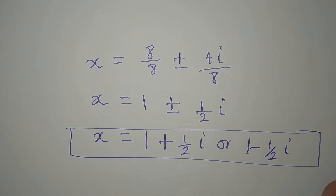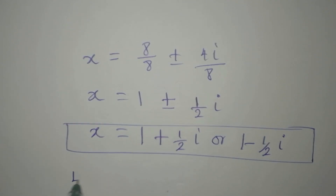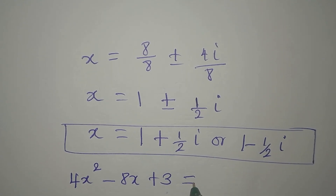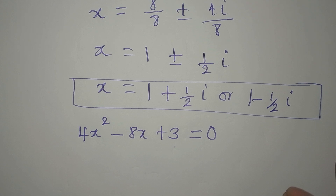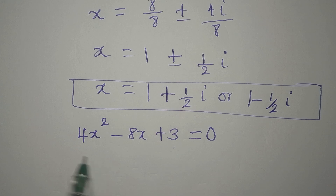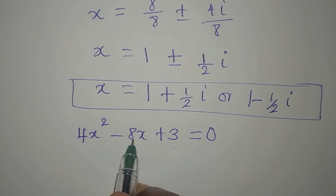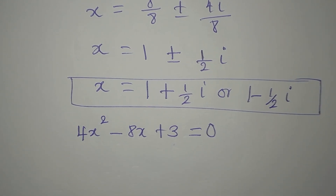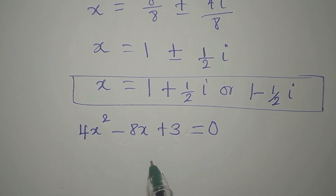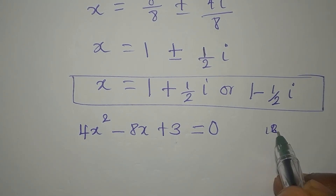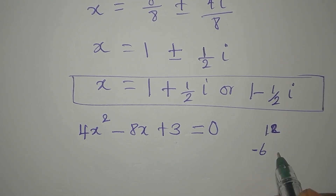We left out one of the factors: 4x squared minus 8x plus 3, and we equate it to zero again. Here a is 4, b is minus 8, c is 3. But let's check if this can be factorized. We multiply 4 by 3 to get 12, and 12 can be written as minus 6 times minus 2, which sum to minus 8.